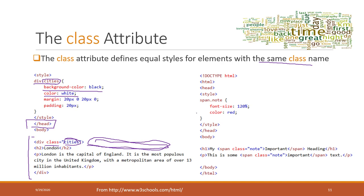Here is another example where we define a span tag class called 'node', and we say the color will be red. So when you want to change the color of an important word to red, you can just say for this word, apply the class equals 'node'.